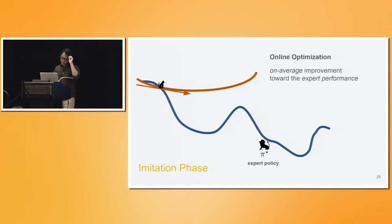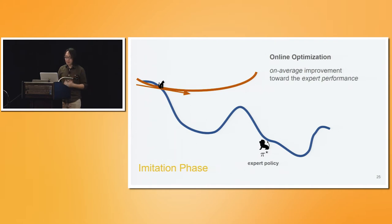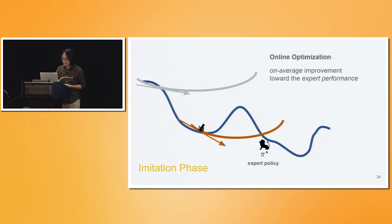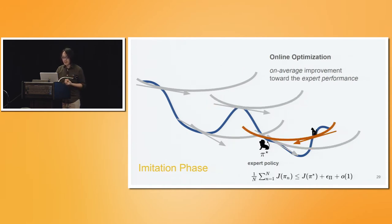To visualize this: in general, the imitation gradient does not lead to a monotonically improving policy sequence. Rather, when using it, you can only guarantee on-average improvement toward the expert's performance. You construct an approximate function and minimize it, but it's not strictly a global upper bound. Iterating this, you will see the learner's performance oscillate a little, and at the end it converges to some epsilon distance from the expert's performance.